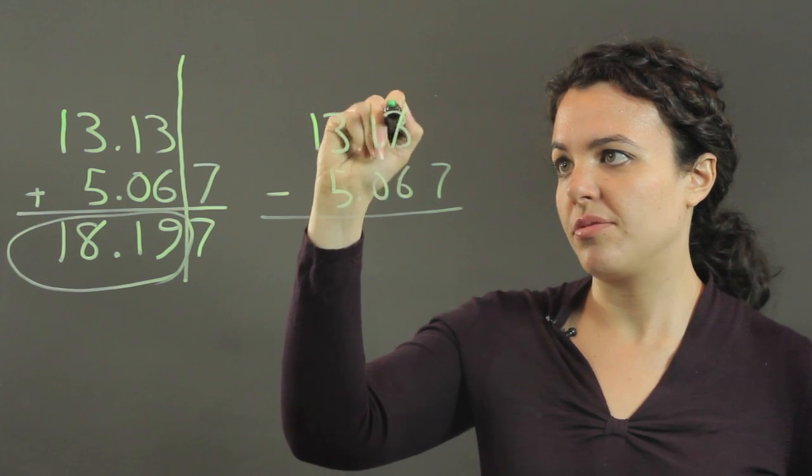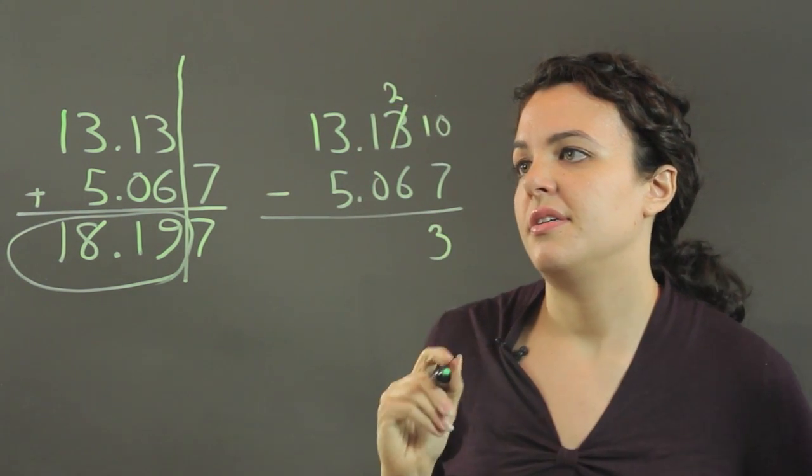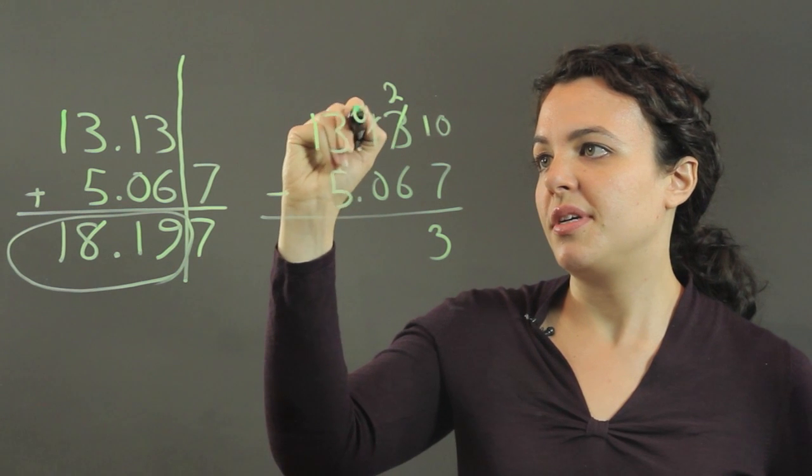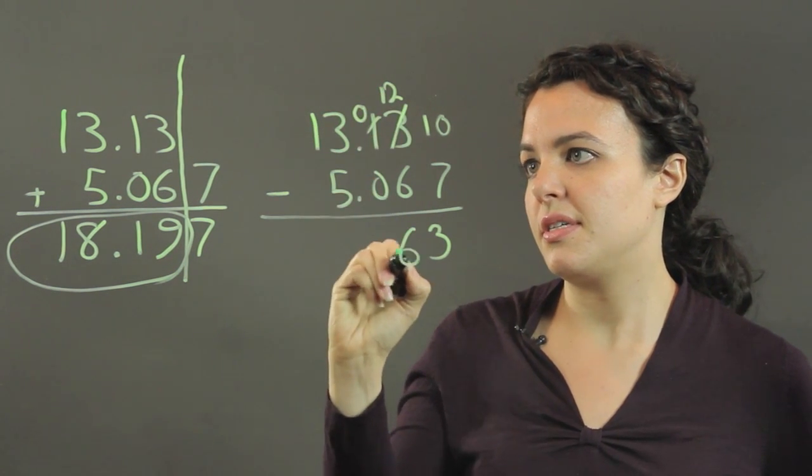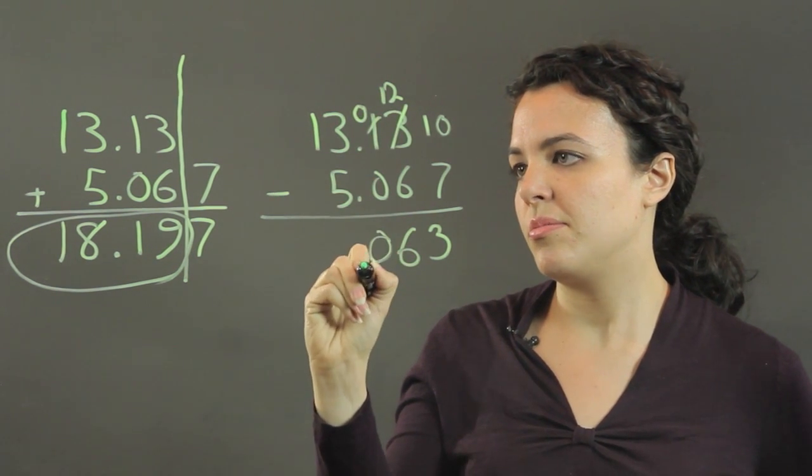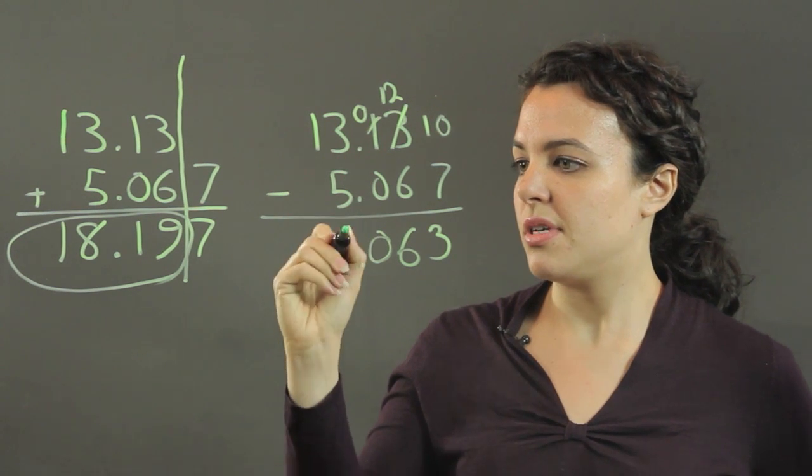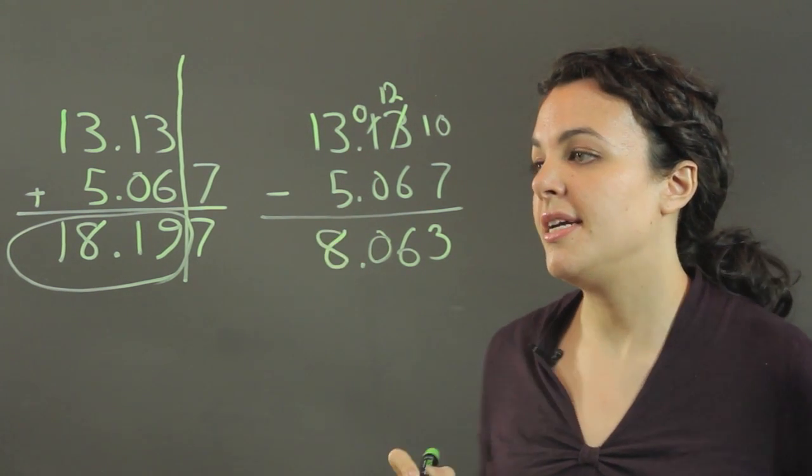Add a borrow from here, 10, so 3. Borrow from here, 12 and a 6. 0.13 minus 5 is 8.